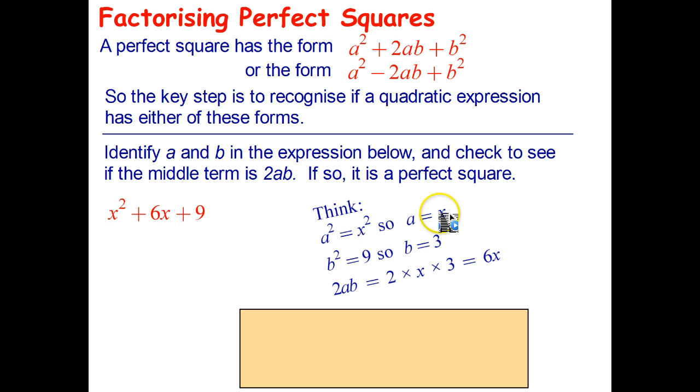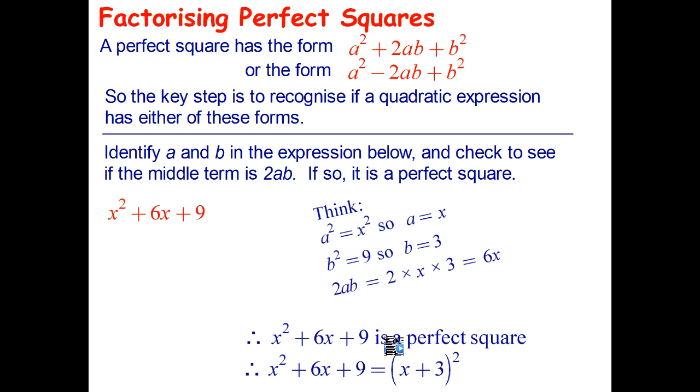Well, 2 times x is 2x times 3 is 6x. It does fit the pattern, so therefore, we know that we can apply the rule for perfect squares and say, therefore, x squared plus 6x plus 9 is just equal to x plus 3 all squared. OK, let's go ahead and actually try that on a couple of questions.